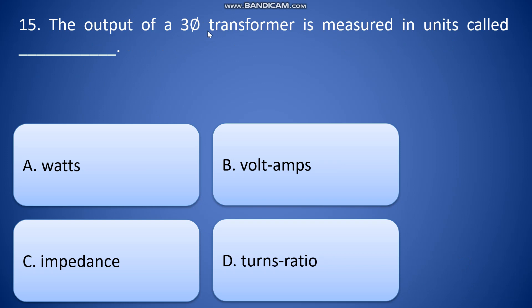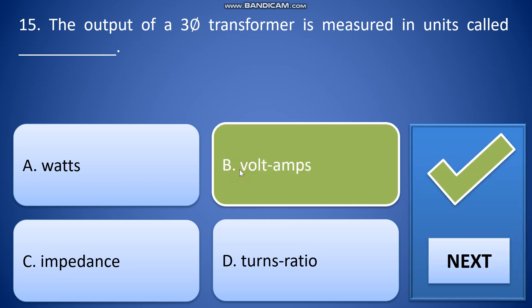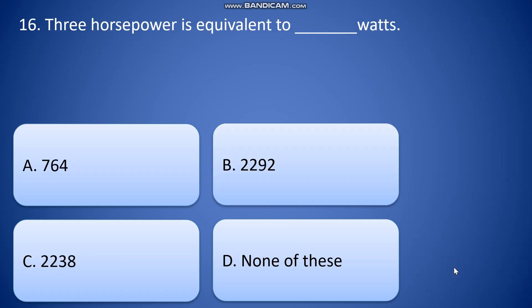The output of a three-phase transformer is measured in units called: A: watts, B: volt-amps, C: impedance, D: turns ratio. The answer will be B, volt-amps.